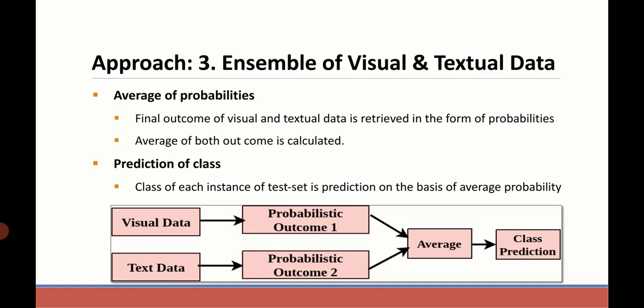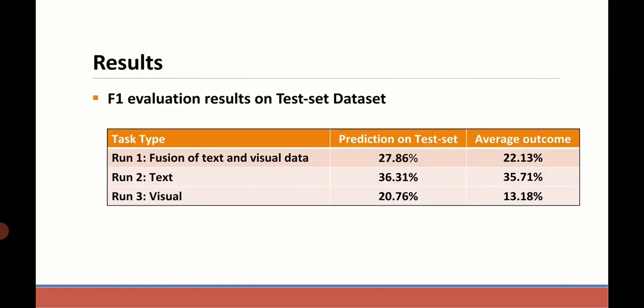These are the results we achieved from three runs. The first run was fusion of text and visual data where we got 27.86 F1 score, and for text we achieved 36.31 F1 score.